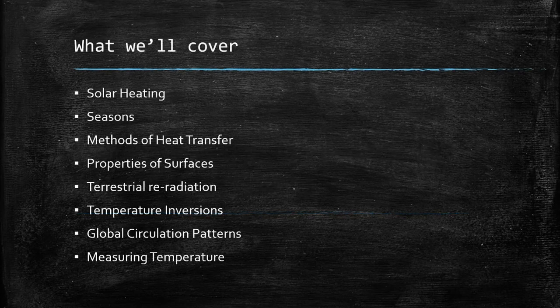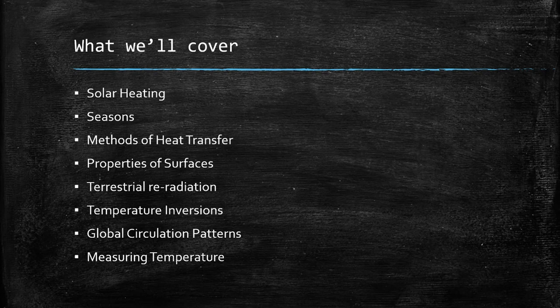We'll begin by having a look at solar heating and how it varies across the Earth's surface. We'll then look at how heat can be transferred from one place to another, and how the properties of different surfaces can influence this behaviour. We'll then look at terrestrial re-radiation and how it can result in temperature inversions. We'll then put this together and see how air masses move on a global scale. Finally, we'll have a brief overview of measuring temperature.